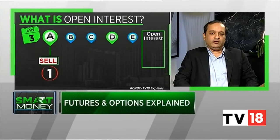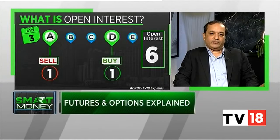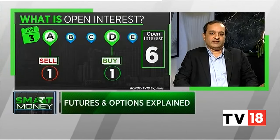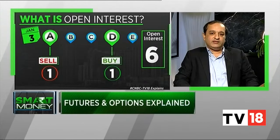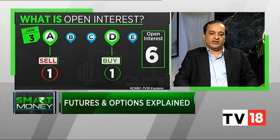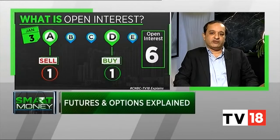Continuing with this example, A sells one contract to D, which means A's position is netted to zero. And out of the six short contracts D was holding, he has bought one from A, so D now only has five contracts. In this marketplace with participants A, B, C, and D, the open interest is now only six, because one contract was extinguished by the indirect transaction between A and D.